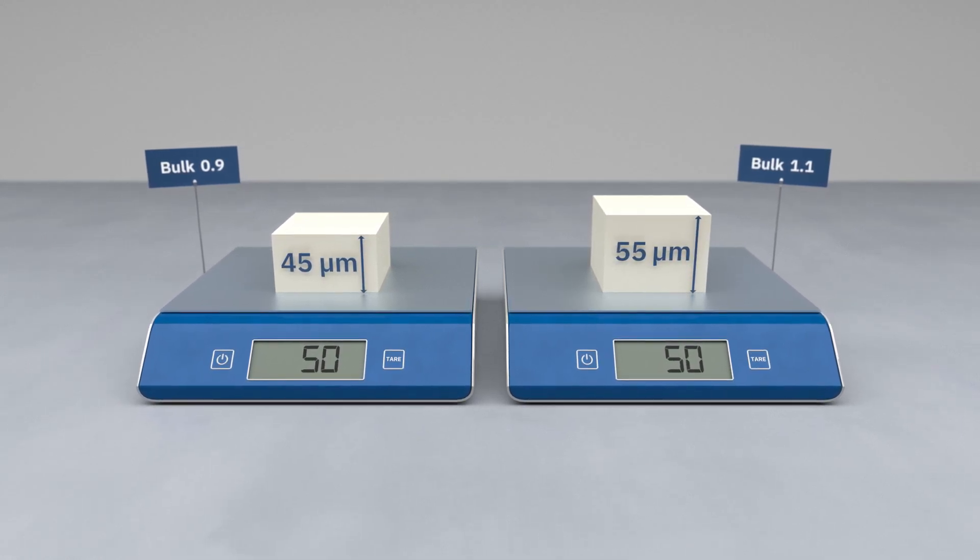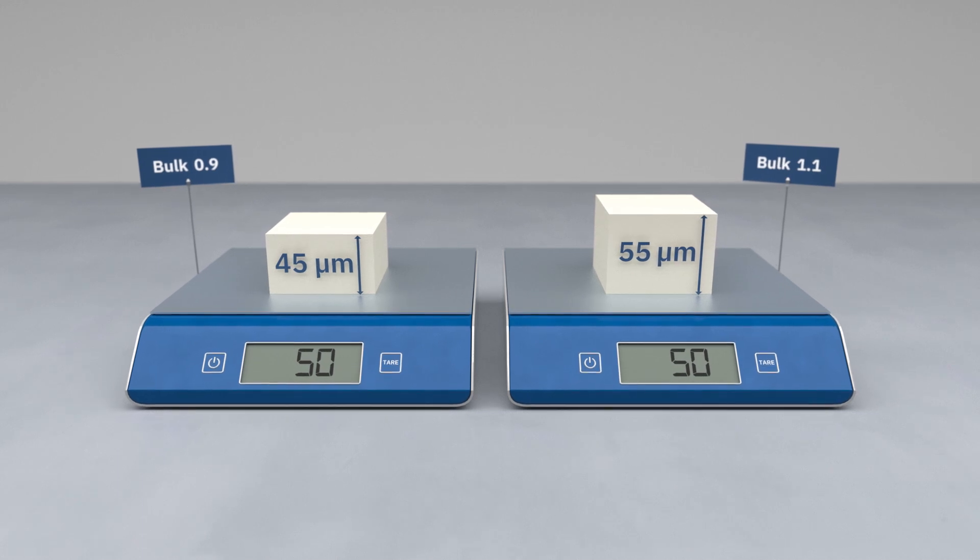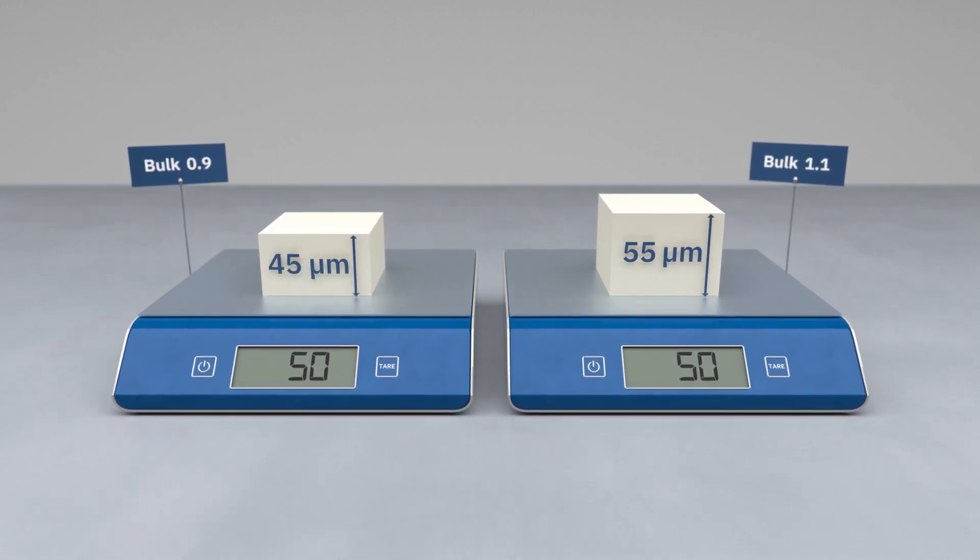This means that the paper weighs the same, but the sheet is actually thicker, because it has lower density and contains more air.